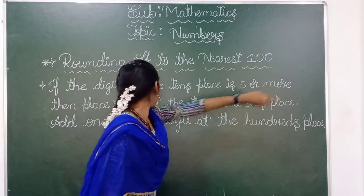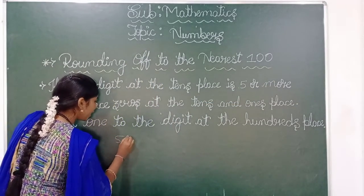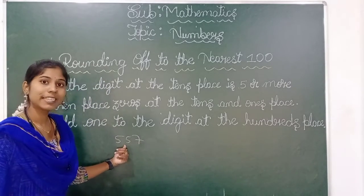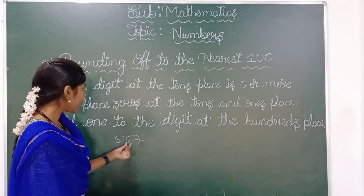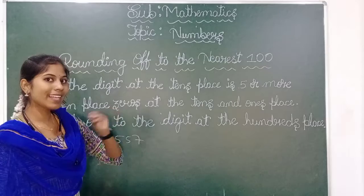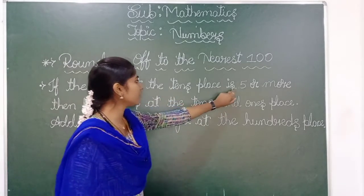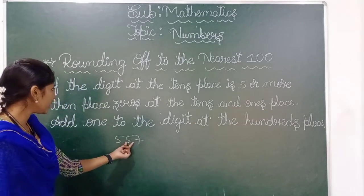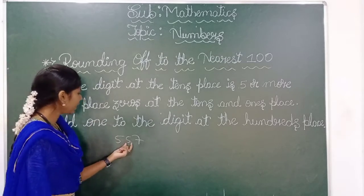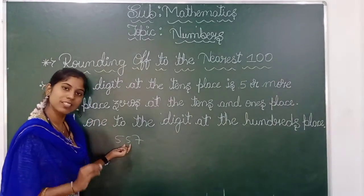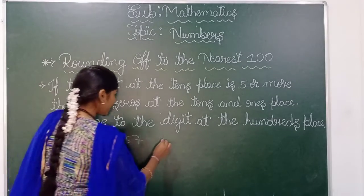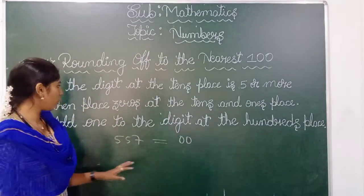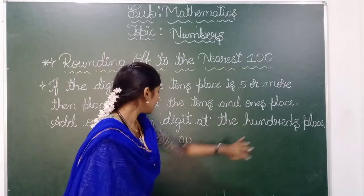But if the number at the tens place is five or more than five — for example, the number 557 — this is the ones place and this is the tens place. Just observe the tens place: the digit is five. So according to the condition, if the tens place is five or more than five, take the ones and tens place digit values as zero.